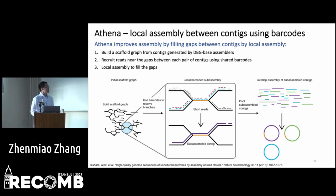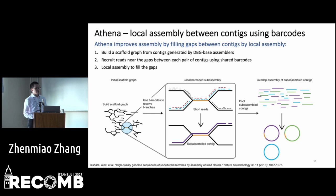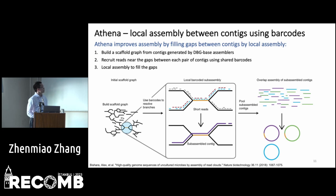Acena is another linked-read assembler that improves assembly by filling the gaps between contigs using local assembly. It builds a scaffold graph from the contigs generated by DBG-based assemblers. Contigs that are adjacent in the scaffold graph are also adjacent in the genome, but there are gaps between them. Acena recruits reads from the gaps between each pair of contigs using shared barcode information, uses local assembly to fill those gaps, and thereby significantly improves the contiguity of the metagenome assembly.